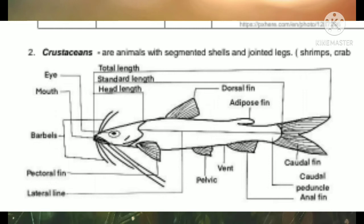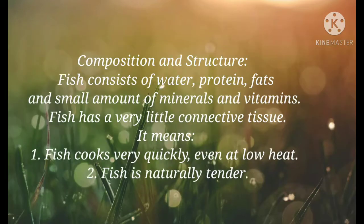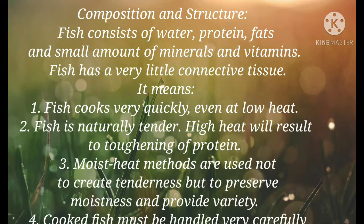You can now see the composition and structure of fish. Fish consists of water, protein, fats, and small amounts of minerals and vitamins. Fish has very little connective tissue, meaning fish cooks very quickly even at low heat. Fish is naturally tender. High heat will result in toughening of proteins. Moist heat methods are used not to create tenderness but to prevent moisture loss and provide variety. Cooked fish must be handled very carefully. Fat fish are those high in fat — examples are salmon, tuna, trout, and mackerel. Lean fish are those low in fat — examples are sole, cod, red snapper, and bass.